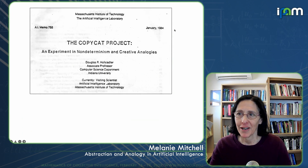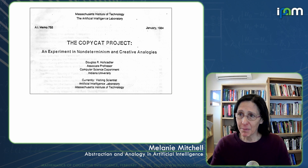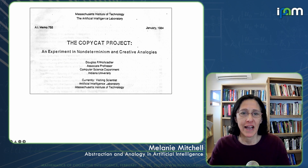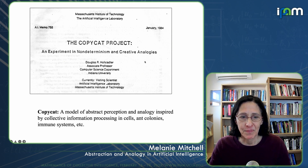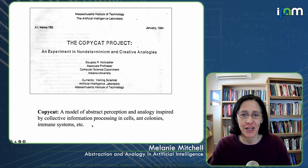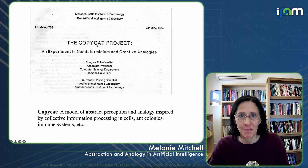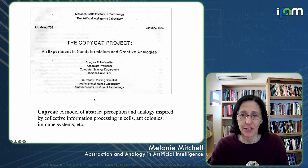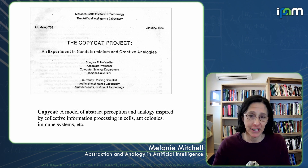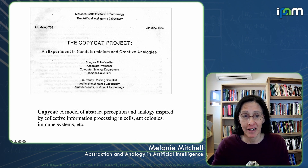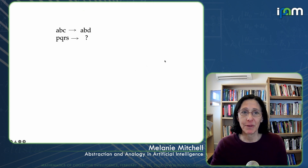Going backwards in time to the 1980s, Hofstadter proposed an even simpler domain called the copycat domain, which consists of analogies using letter strings. In a tech report, he proposed a model of making analogies and abstract perception that's inspired by collective information processing in natural systems like ant colonies.